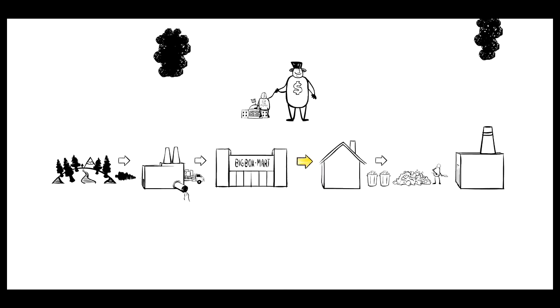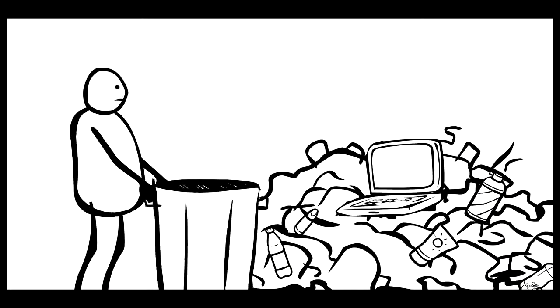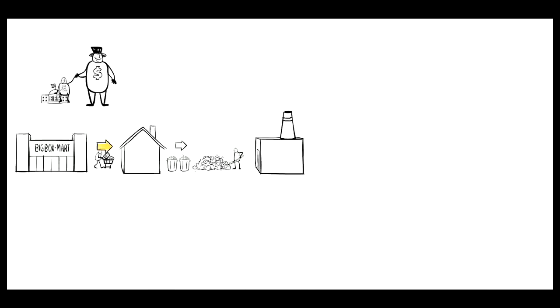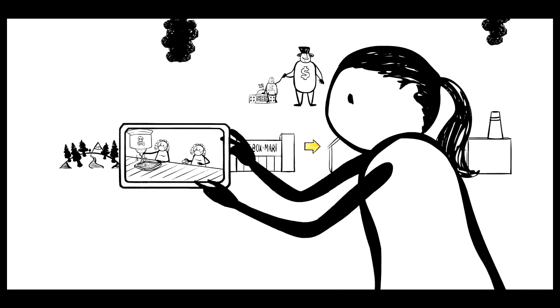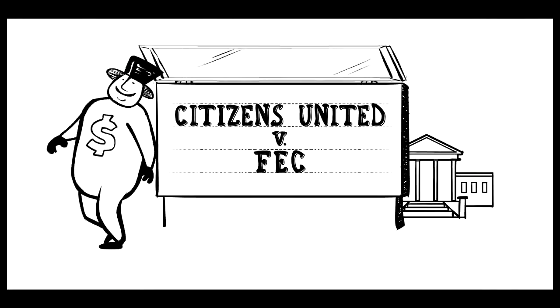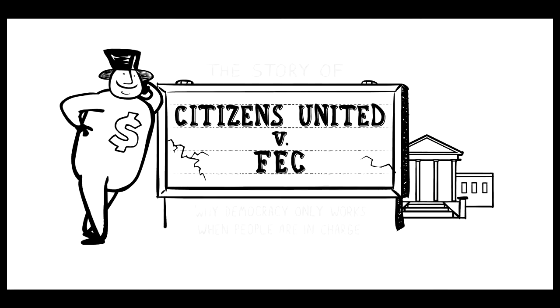In Season 1 of The Story of Stuff, we looked at a system that creates way too much stuff and way too little of what we really want. Now we're going to start looking at the stories behind The Story of Stuff. That's where we'll find ways to turn this situation around. Welcome to Season 2.